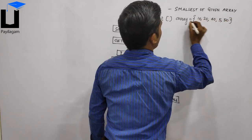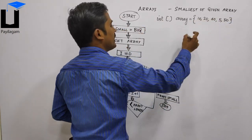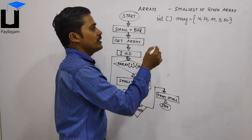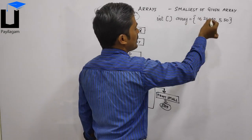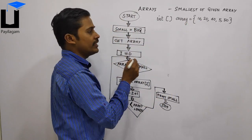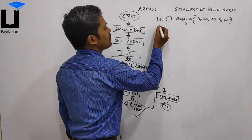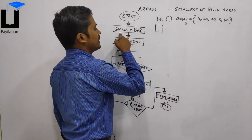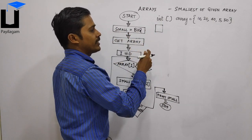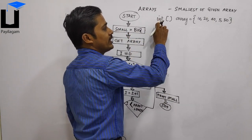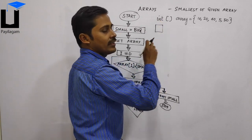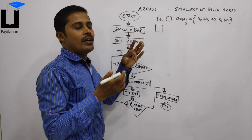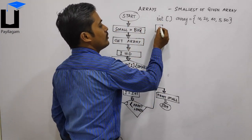Now we have a variable called 'small'. In this small variable, we store the smallest one. What I'm doing here is — this is an integer. You write the smallest number into this variable.